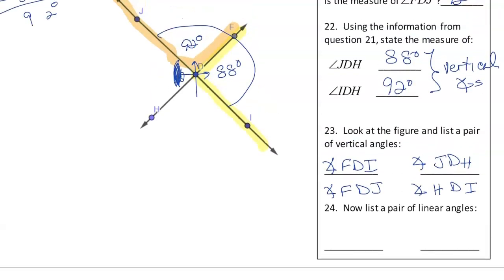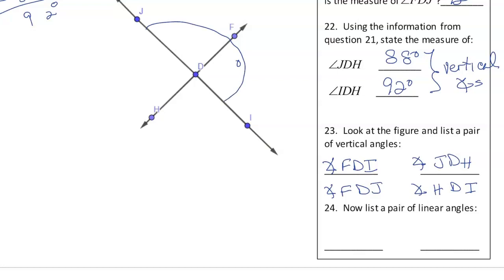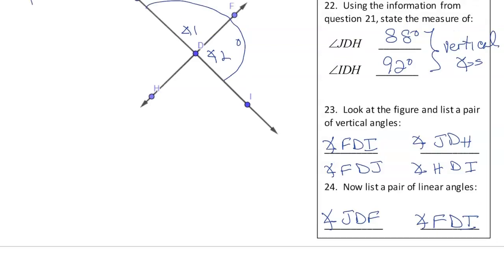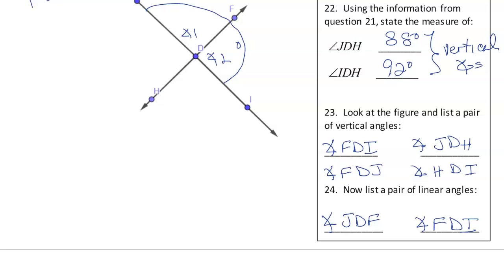Now list a pair of linear angles. Linear angles are on the same line. One example is angle JDF and angle FDI — that's a pair of linear angles. Another pair would be angle JDH and angle IDH. There are other pairs out there as well, but those are two pairs.